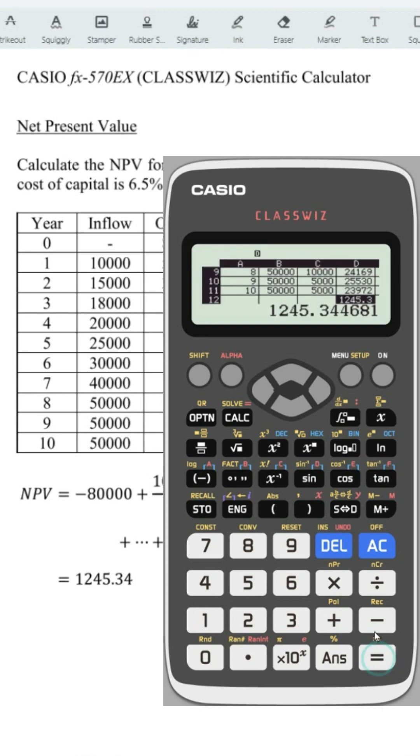Press equal, equal again, and we should now obtain the net present value as we can see here.